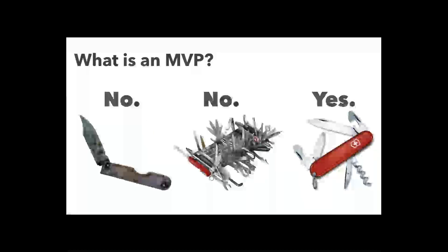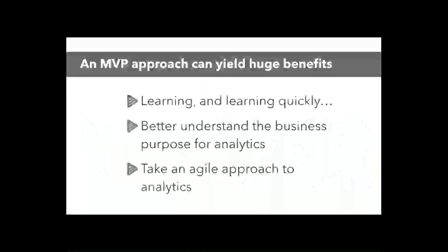So what is a minimum viable product? It is really a technique or process that you approach for — typically it's in agile development or launching a new product, but it can also be applied to launching an analytics application. The point is to figure out what is the minimum level of features you need to help somebody do their job better in the case of analytics, and knowing that it's going to be a learning process to help you determine what the final set of features and functions you need to deliver.